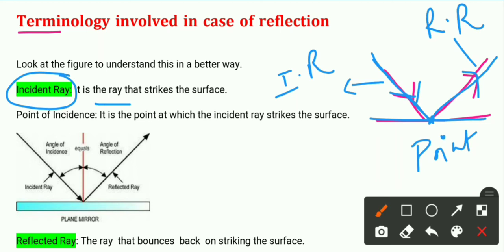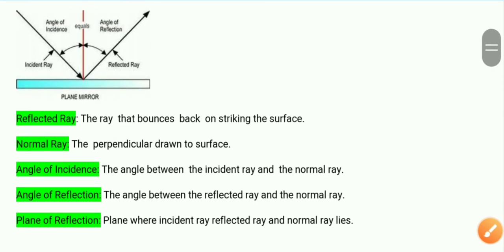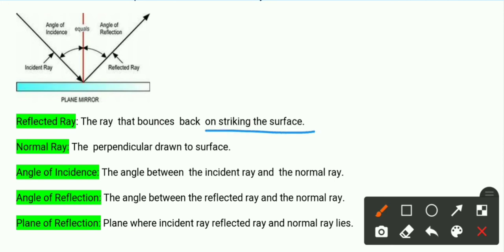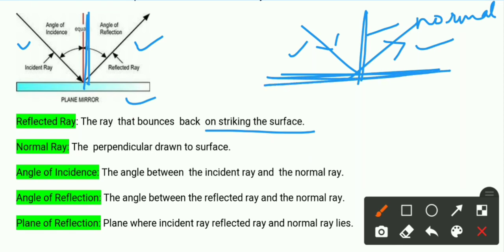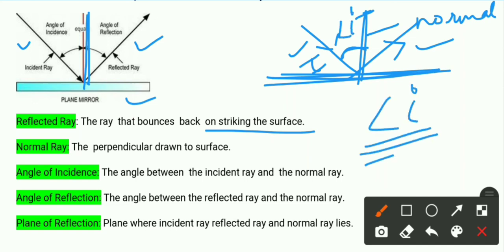As we have seen the incident ray and reflected ray — at the point of incidence, we draw a perpendicular to the surface, which is called the normal. The incident ray, reflected ray, and normal all lie on the same plane. The angle between the incident ray and the normal is denoted by i and called the angle of incidence. The angle between the reflected ray and the normal is denoted by r and called the angle of reflection.